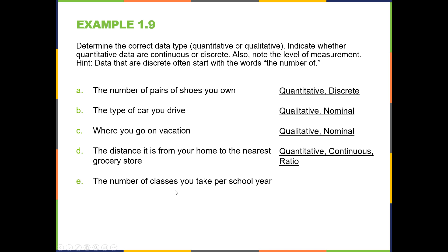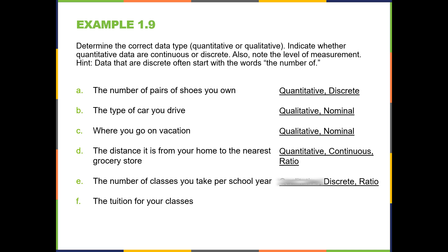The number of classes you take per school year. Again, we see the phrase 'the number of,' which means we're counting — so it's quantitative, discrete, and ratio. Tuition for your classes: the data would be thousands or hundreds of dollars, and that is something you count — a number of dollars. So this would be quantitative, discrete, and ratio. Of course, we have a natural zero: you could technically have zero tuition for your classes.